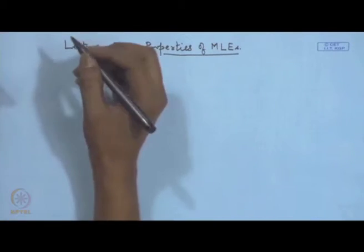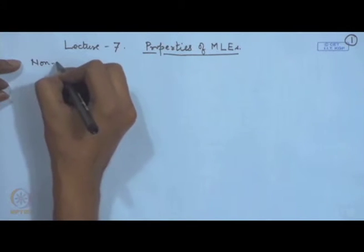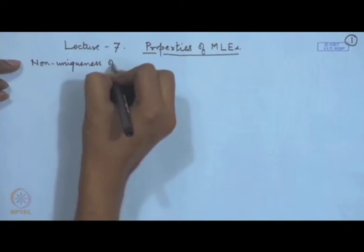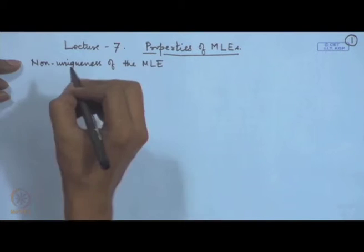First of all, we note that in various problems we have done, in most of those problems we have got a unique value of the maximum likelihood estimator. That means there is a function corresponding to the estimator. However, that is not necessarily the case. Sometimes we may have non-uniqueness. Let me give an example of that non-uniqueness of the MLE.